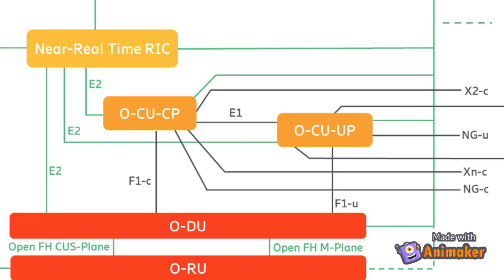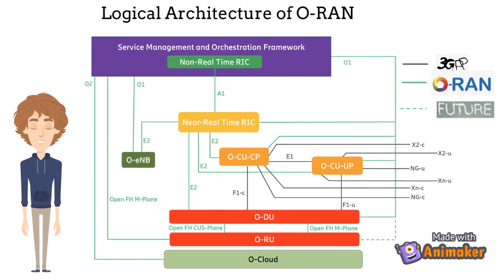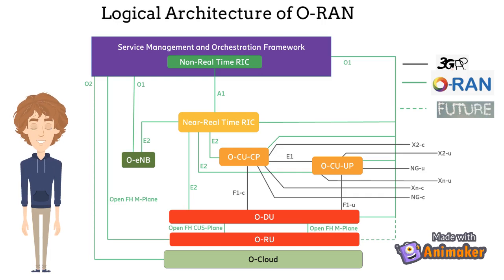ORAN network functions can be VNFs — virtualized network functions — or CNFs — container network functions — sitting above the Ocloud, or PNFs — physical network functions — utilizing customized hardware. All ORAN network functions are expected to support the O1 interface when interfacing the SMO framework.